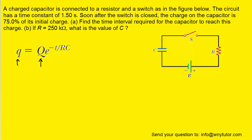We were told that after some amount of time, 75% of the initial charge remains. This means that lowercase q is going to be 0.75, or 75%, of the initial charge capital Q.